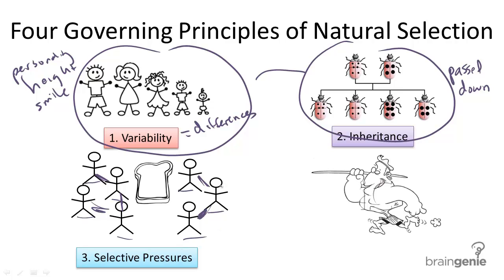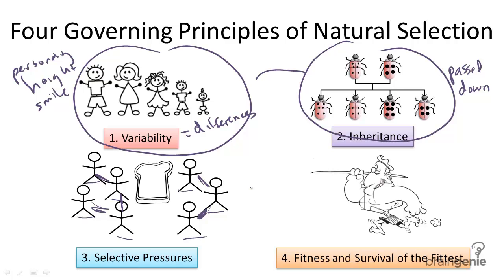Selective pressure is either for or against certain traits. Those that have the traits that enable them to get to the food will survive, thus bringing us to our fourth principle: fitness and survival of the fittest. Not only do these traits — and they could be strength, or brains, or leg length, or the idea that a whale developed a flipper — certain organisms had innate differences that led them to survive long enough, and this is important, in order to reproduce.